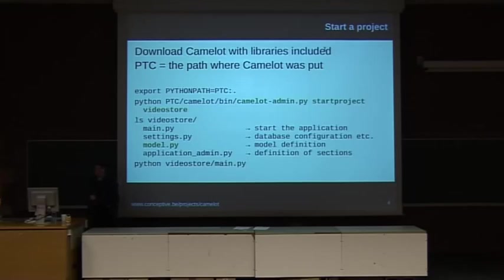So we just start the video store project, and then the Camelot admin tool will create a couple of files: the main file, which is obviously the file you need to start if you want to launch the application; the settings file, which contains your database configuration and the location of your images and items; the model file, which contains the Elixir object model and also contains the definition of how your model should be visualized.